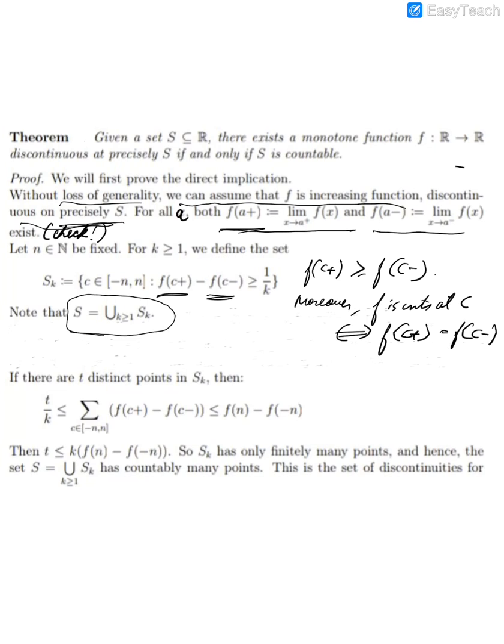Now we proceed as follows. If we have t distinct points in S_k, we want to somehow bound the cardinality of each S_k. If we can show that S_k is finite, then their countable union will be countable and thus S is countable. We proceed by showing: if there are at least t distinct points in S_k then t/k ≤ Σ[f(c+) - f(c-)] ≤ f(n) - f(-n).